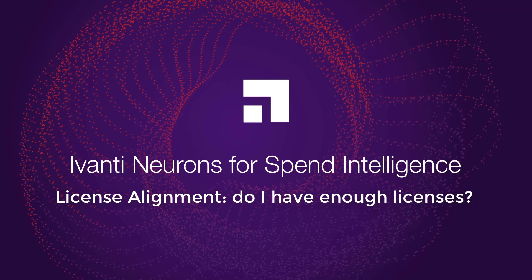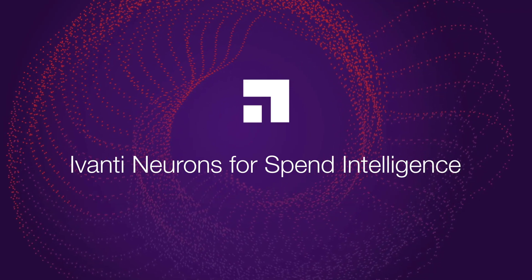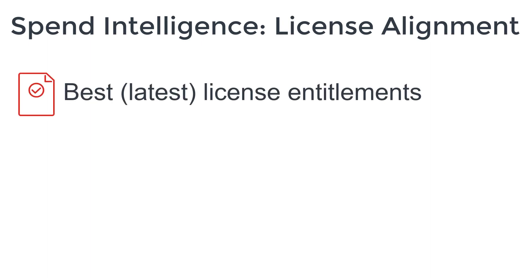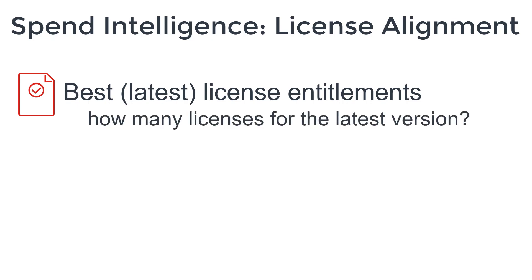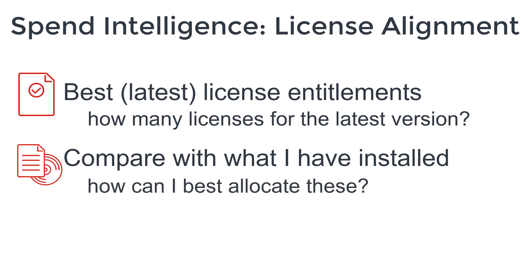Hi everyone. In this video we're going to look at license alignment in Ivanti Neurons for Spend Intelligence. License alignment helps you to understand what your best or latest license entitlements are — how many licenses you can claim for the latest version of a software title. When you have this number you can compare it with the software you actually have installed and see how best to allocate those licenses.